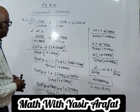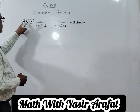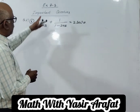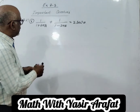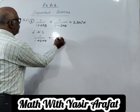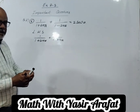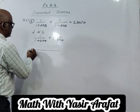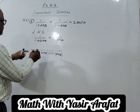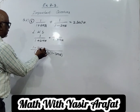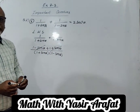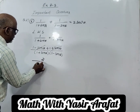Now come to the next question, students. This is question number 2 of the 10th part — the last part we are going to discuss from exercise 8.3. Take out the left hand side: 1 over (1 + sin θ) plus 1 over (1 − sin θ). Taking the LCM, which is (1 + sin θ)(1 − sin θ). So this gives 1 − sin θ plus 1 + sin θ in the numerator; the minus sin θ and plus sin θ cancel, giving 1 + 1 = 2.